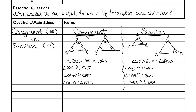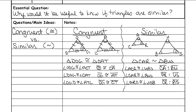On congruent triangles, you also have congruent corresponding sides. But for similar triangles, your sides are no longer congruent, because the car triangle is smaller than the bus triangle. So your sides are actually proportional — they are not congruent. The list looks like this.